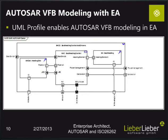The next example is the AUTOSAR virtual function bus modeling with Enterprise Architect. You see here an example taken from the AUTOSAR standard specification of a virtual function bus model. We are able to provide you the UML profile to support the AUTOSAR modeling standard, so you can use the AUTOSAR modeling symbols with Enterprise Architect. It is also possible to combine these diagrams with other diagrams in the Enterprise Architect model, like SysML models and SysML diagrams.